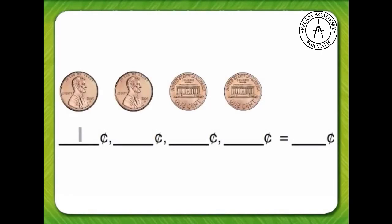One penny is one cent. One penny plus one more penny is two cents. Two pennies plus one more penny is three cents. Three pennies plus one more penny is four cents.